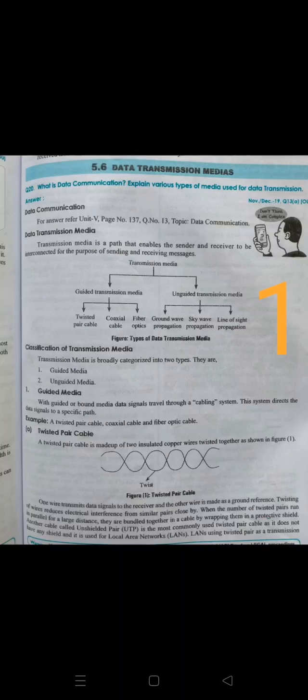Guided and unguided transmission medias are two different types. In guided transmission media, physical equipment like cables are used — it is also called bounded media. Data signals travel through a cabling system and are directed to a specific path. Examples include twisted pair, coaxial cable, and fiber optic cable. For unguided transmission media, the medium may be air, sky wave propagation, line-of-sight propagation, or ground wave propagation — these are wireless.